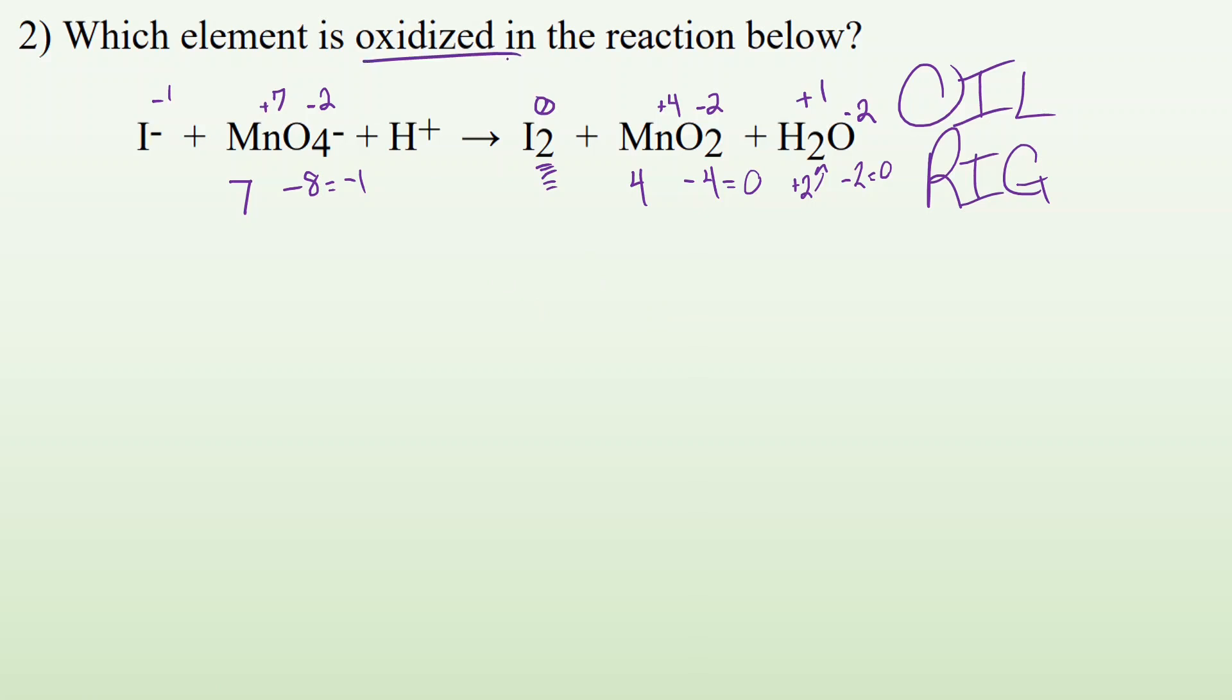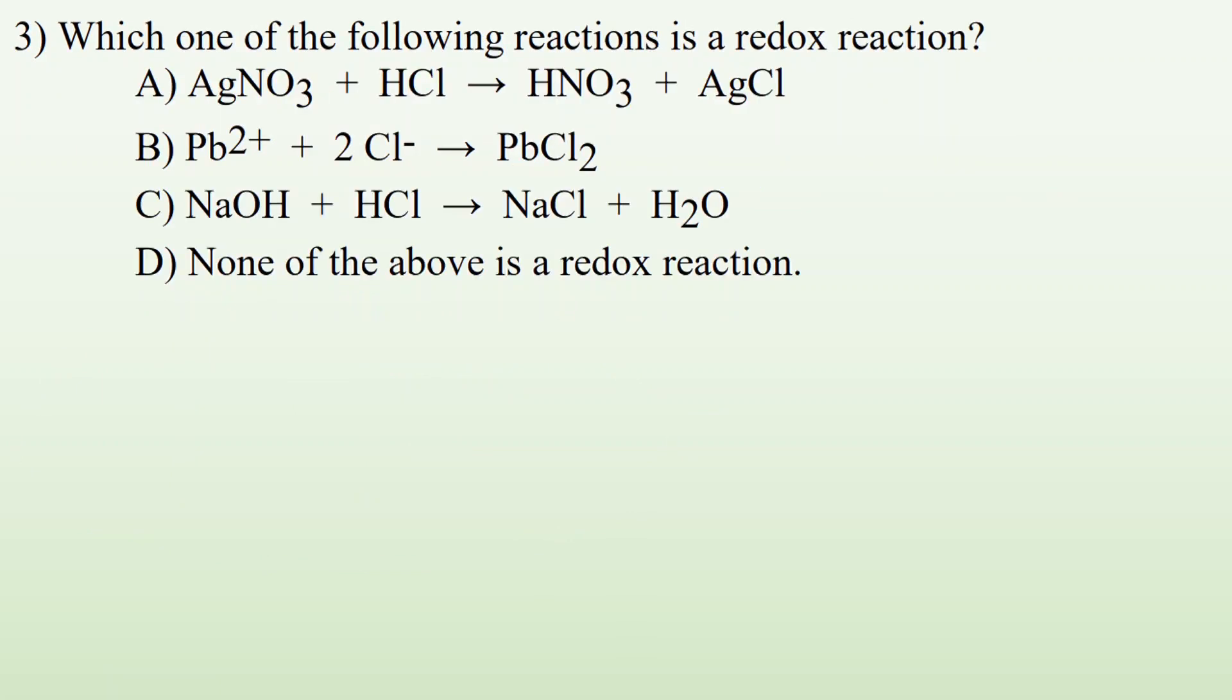Now, so what element is oxidized? We're looking for the oxidation number to go up. So which one of these went up? Well, let's see. Iodine went from minus one to zero. That looks good. So I minus one went up. Let's check the rest of them, though. Mn went from a plus seven to a plus four. Well, that got reduced. The charge went down and became more negative or less positive. But oxygen stayed at minus two and hydrogen stayed at plus one. So the thing that got oxidized is going to be this I minus one.